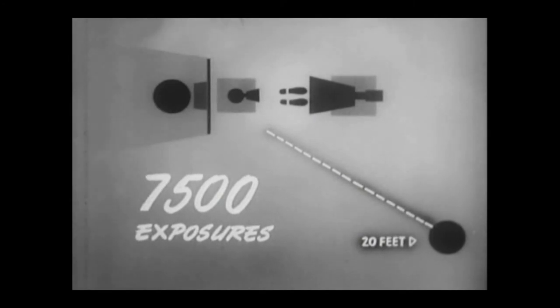However, behind a lead screen or at a distance of at least 20 feet, the person would not exceed three-tenths of a roentgen per week until after 7,500 exposures were made.